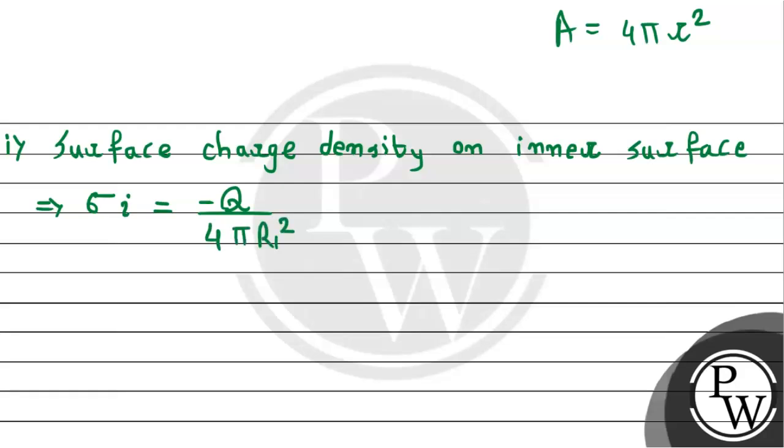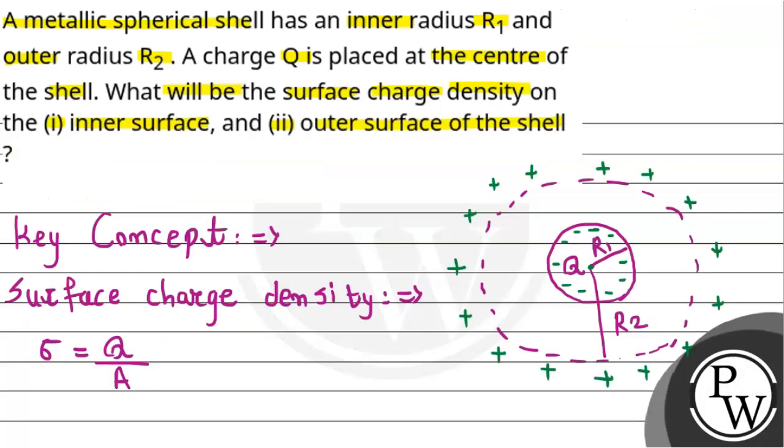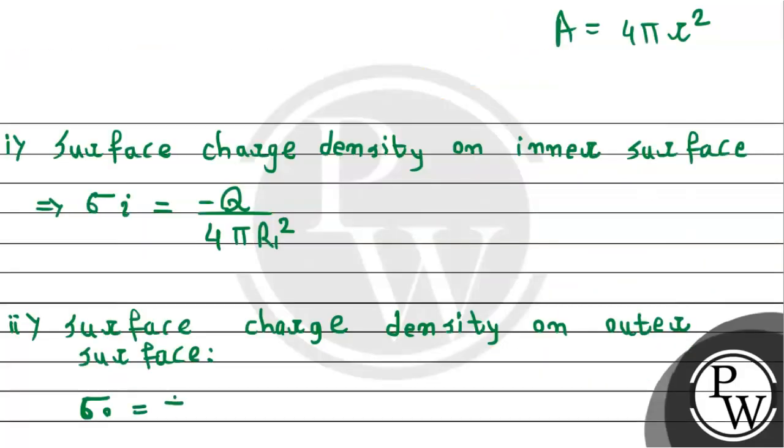Similarly, surface charge density on outer surface of the spherical shell is sigma o, and this will be equal to positive Q. So the outer surface has positive charge induced, so this will be simply positive Q divided by the area 4 pi R2 whole square.